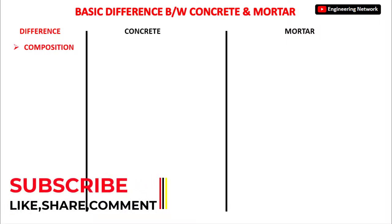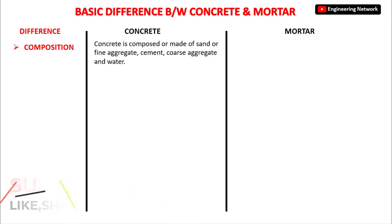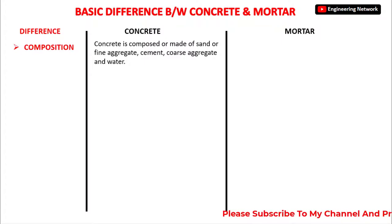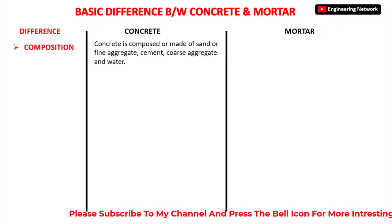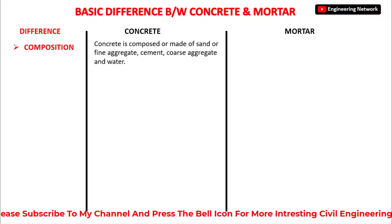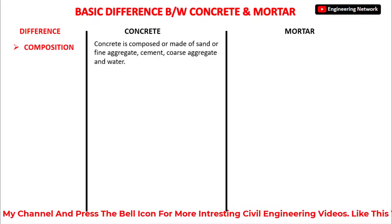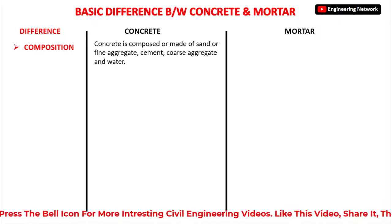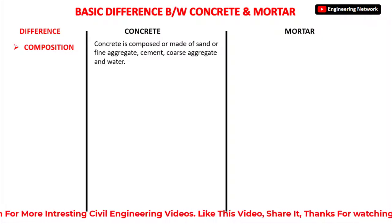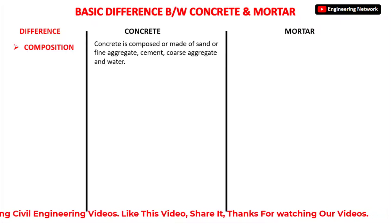Concrete is composed of sand or fine aggregate, cement, coarse aggregate, and water. Which means that if we mix these materials together we get a mixture which is called concrete.